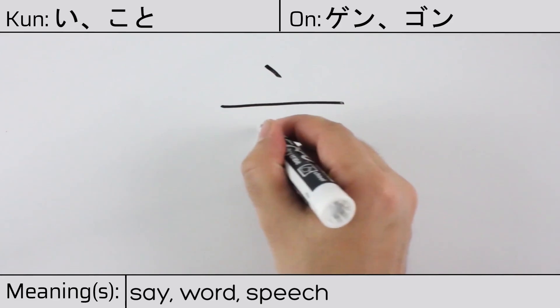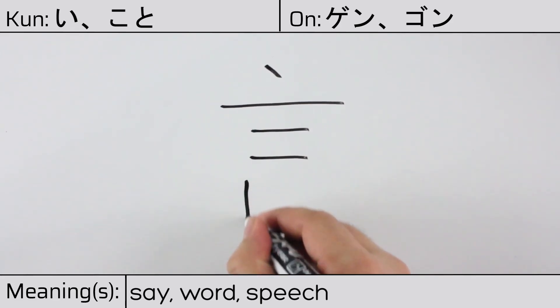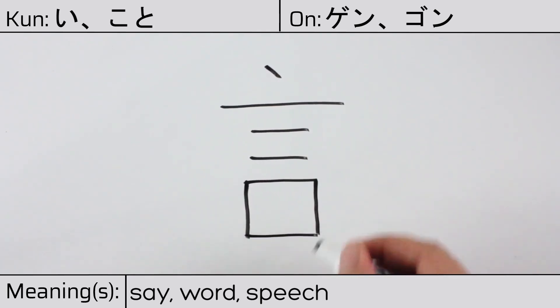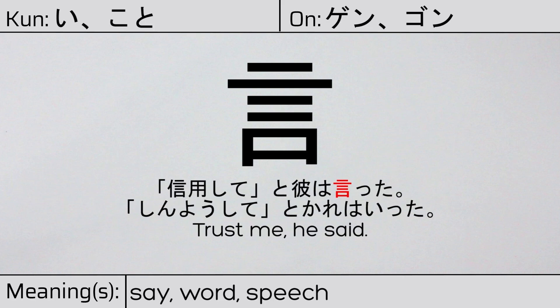This character is made up of the following radicals or parts: four lines indicating writing or words, followed by the kanji character meaning mouth, kuchi. You can remember this kanji by thinking of it as words coming out of a mouth, as if someone were speaking. Our example sentence is: 信用して、to kare は言った — Trust me, he said.